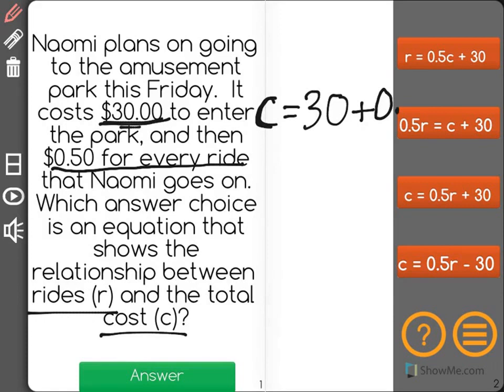So that's 0.50 for every time you go on a ride. It did not specify how many rides, but what it did say is that rides will be represented by the variable R.